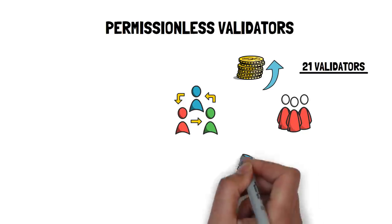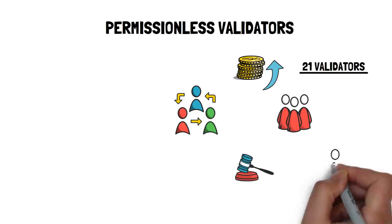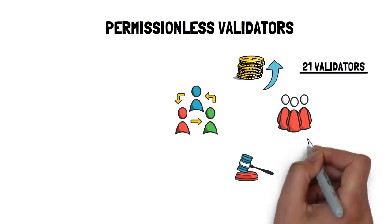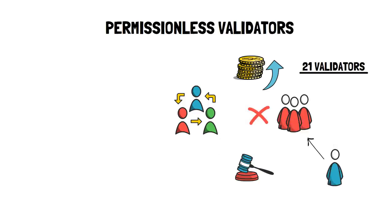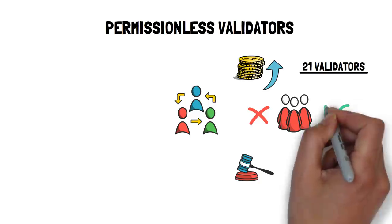Similarly, in a proof-of-authority model, the chain initiator chooses authorities to run the chain. This excludes most participants and creates a situation where only a selected few are responsible for making sure the transactions are validated correctly.